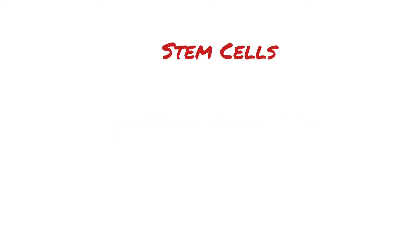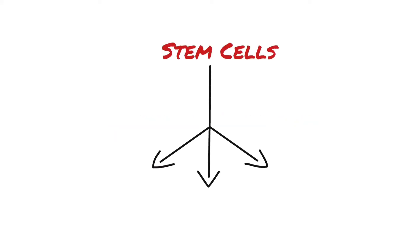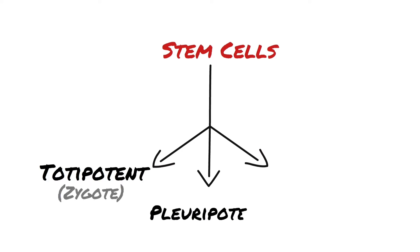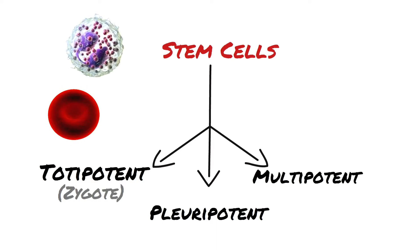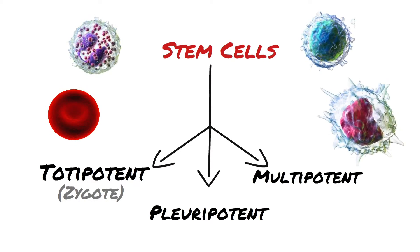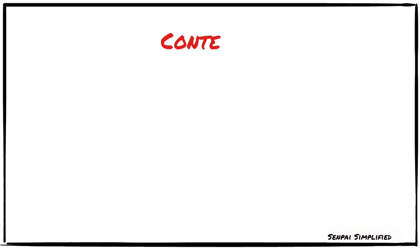All the cells are derived from a totipotent cell — the zygote. All blood cells are derived from pluripotent stem cells, which divide into five discrete unipotent stem cells: erythrocytes, granulocytes, lymphocytes, monocytes, and platelets.